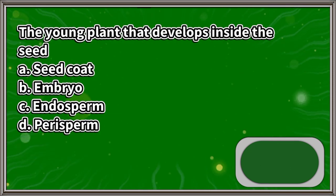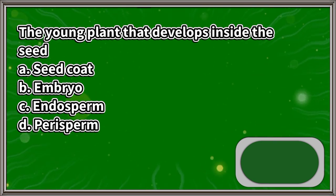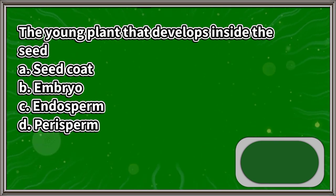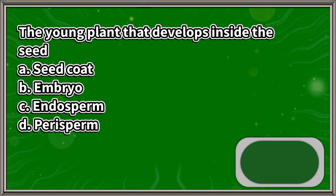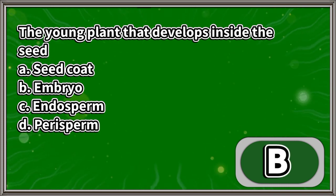The young plant that develops inside the seed: A. Seed coat, B. Embryo, C. Endosperm, D. Perisperm. The answer is letter B.